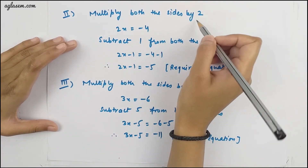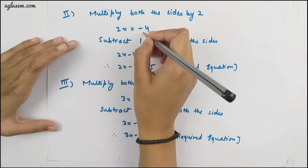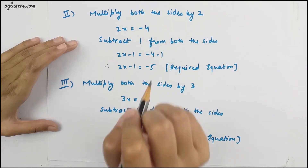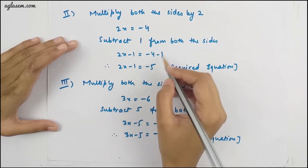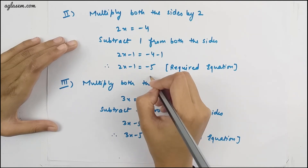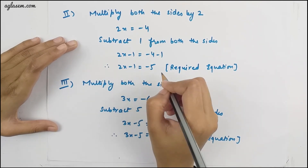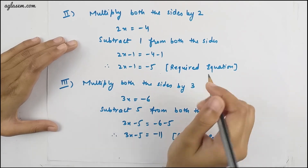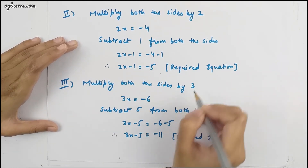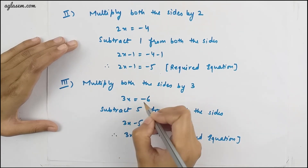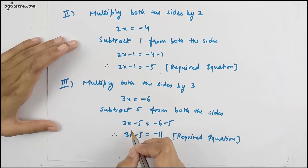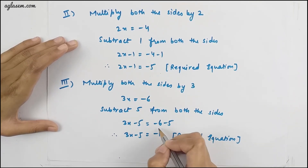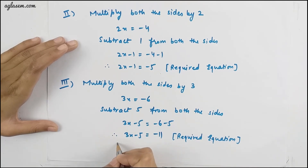Second equation: multiply both sides by 2, giving 2x = −4. Subtract 1 from both sides: 2x − 1 = −4 − 1. So the equation 2x − 1 = −5 is formed. Third equation: multiply both sides by 3, giving 3x = −6. Subtract 5 from both sides: 3x − 5 = −6 − 5. So the equation 3x − 5 = −11 is formed.